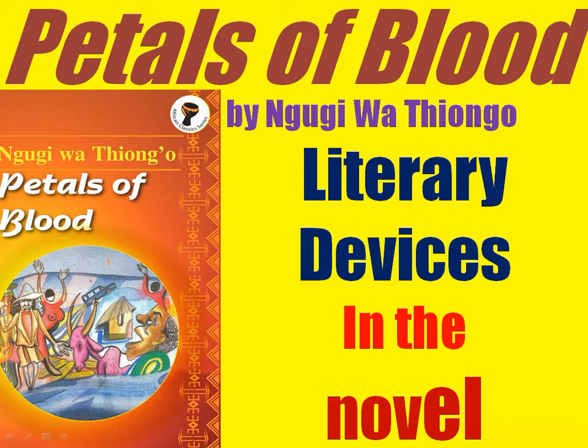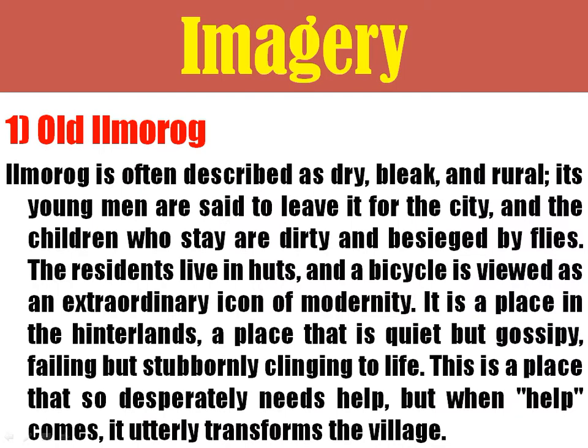We have discussed all of them extensively before — each character, the role of each character, Wanja and other characters. Today we'll be looking at the literary devices, and we are going to start with imagery — that is, the images we find in the novel. What are some of the images that are very prominent and dominant in the novel Petals of Blood?